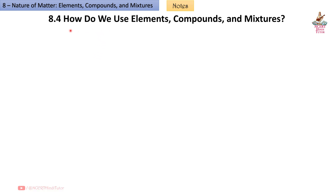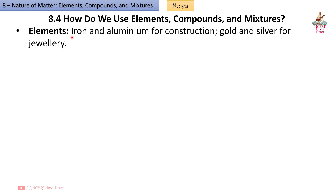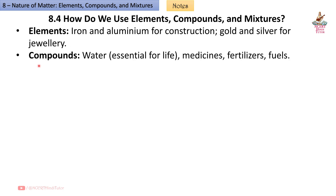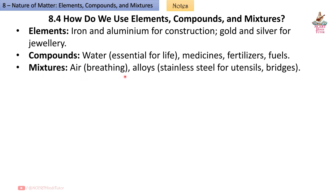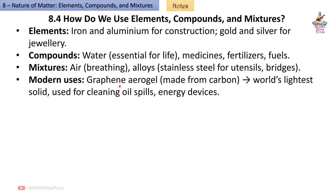8.4 How do we use elements, compounds and mixtures? Elements: Iron and Aluminium for construction; Gold and Silver for jewellery. Compounds: Water — essential for life; Medicines, Fertilizers, Fuels. Mixtures: Air for breathing; Alloys — Stainless Steel for utensils and bridges. Modern uses: Graphene and Aerogel, made from Carbon — Graphene is used in energy devices; Aerogel is the world's lightest solid, used for cleaning oil spills.